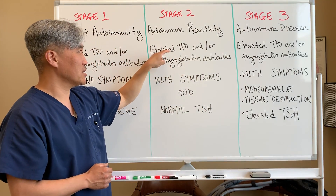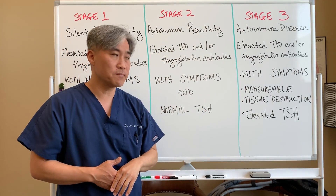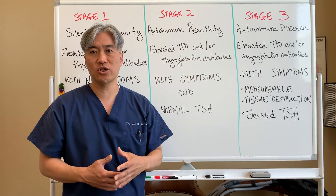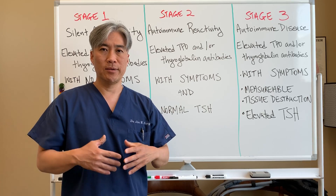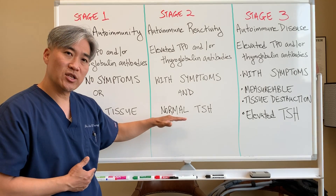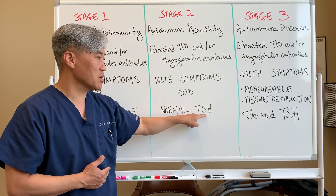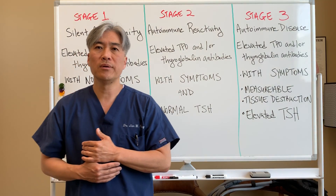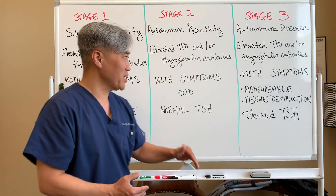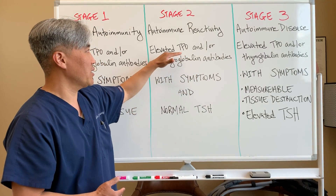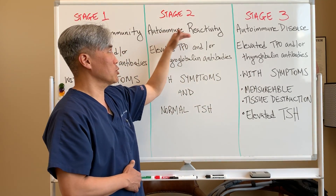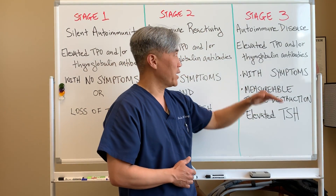The second stage is when they come in and they have autoimmune reactivity. What that means is they have elevated thyroid antibodies, but they also have symptoms — symptoms of hair loss, brittle hair, constipation, fatigue, cold intolerance, etc. They have symptoms, but when they check their TSH — thyroid stimulating hormone — it is normal. In the medical model, if TSH is normal, there's nothing to do, yet they are experiencing symptoms.